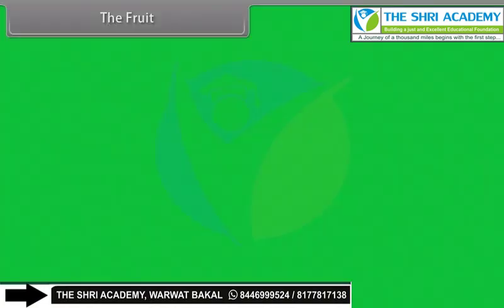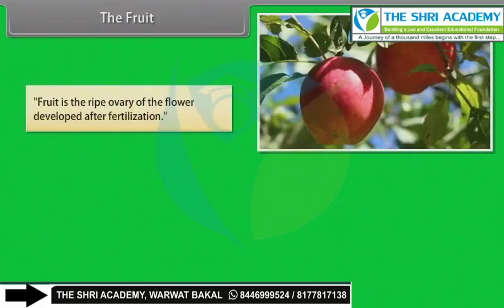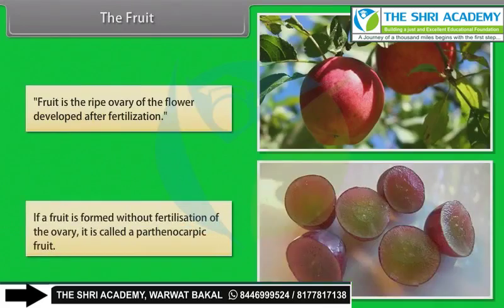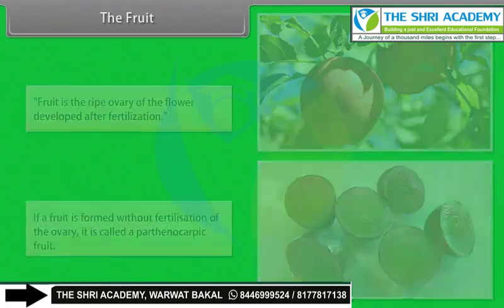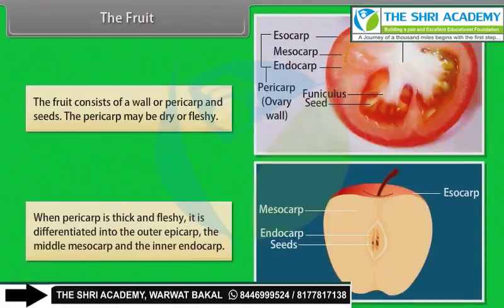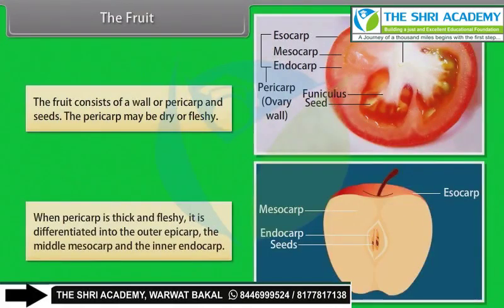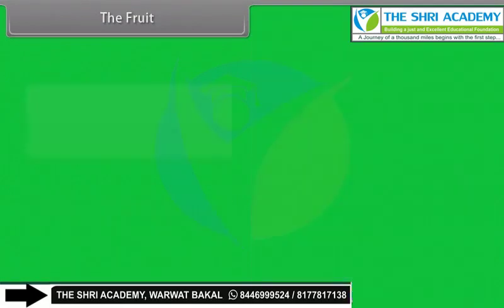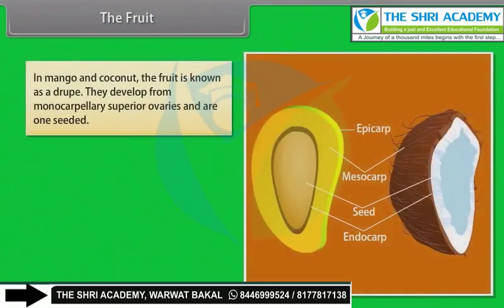Fruit is the ripe ovary of the flower developed after fertilization. If a fruit is formed without fertilization of the ovary, it is called a parthenocarpic fruit. The fruit consists of a wall, a pericarp and seeds. The pericarp may be dry or fleshy. When pericarp is thick and fleshy, it is differentiated into the outer epicarp, the middle mesocarp, and the inner endocarp.